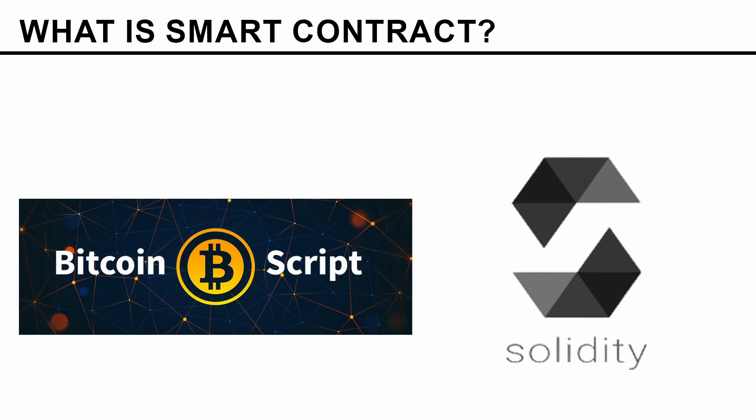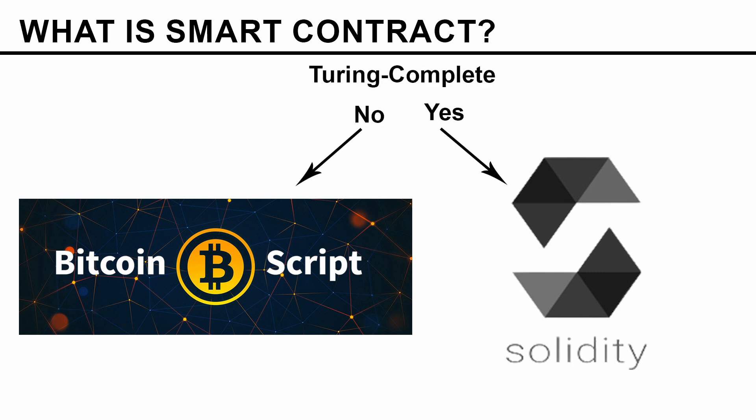We will be talking more about Solidity and Ethereum. The reason for that is the Turing completeness of the language. Bitcoin Script is not Turing complete, whereas Solidity is Turing complete. If a programming language is Turing complete, it means you can code absolutely any logic into that language — anything you can think of, any logic you can write on paper or have in your mind, you can code it in that language.